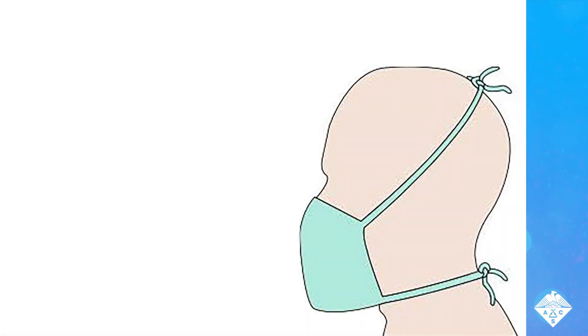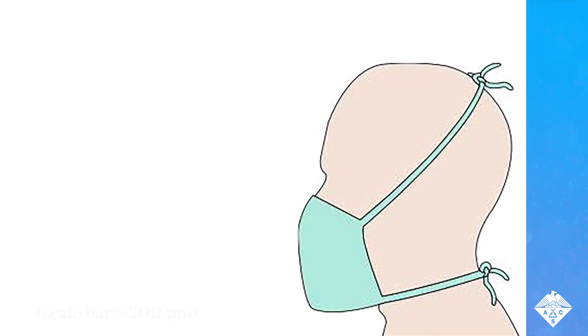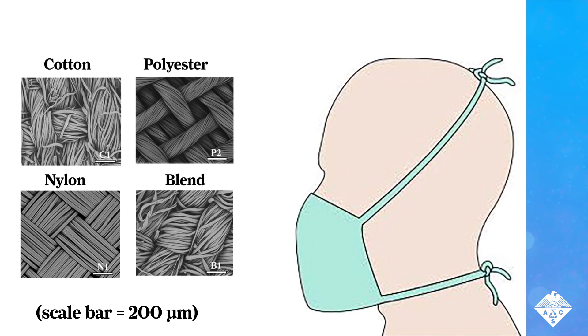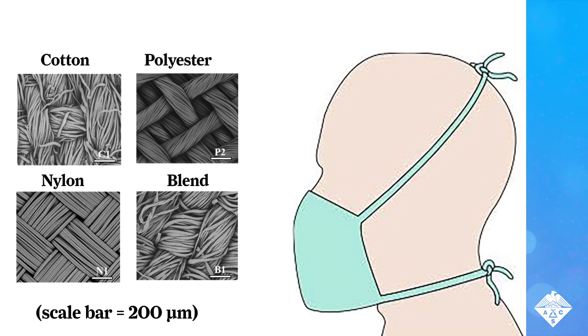The researchers made simple face masks with 17 commonly available fabrics, including different weights and thread counts of cotton, polyester, nylon, and blends shown magnified here. Each mask had one, two, or three layers of the same or different fabrics.